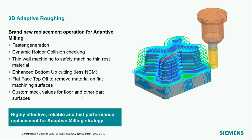Also from December 2022 is 3D Adaptive Roughing — the brand new replacement for the legacy adaptive milling. Highlights include much faster generation time using multi-threaded processing across all processor cores, more dynamic holder collision checking, and enhanced bottom-up cutting. The non-cutting motions from level to level are improved to reduce time not in cut. This is a highly effective, reliable, and higher-performing toolpath. The legacy adaptive milling is still available in the software as well.